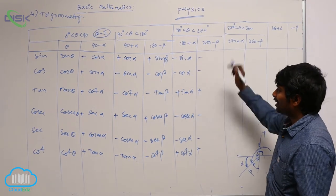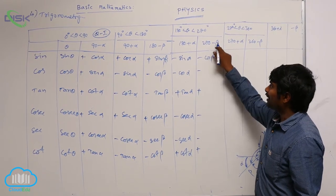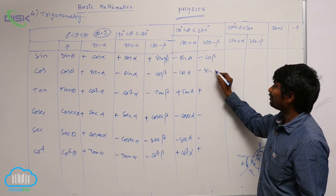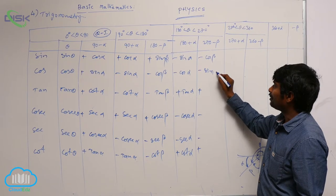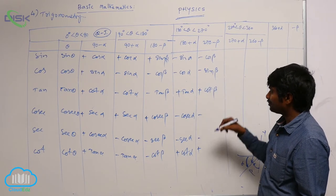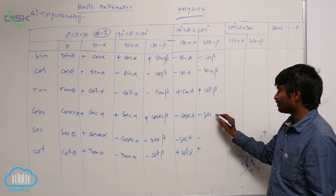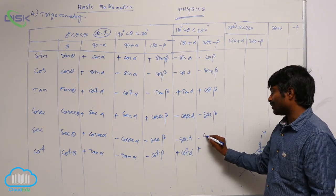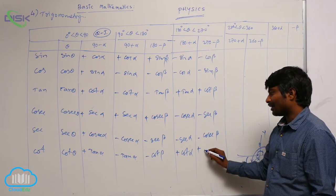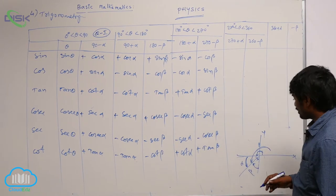For 270°, the ratios swap: sin will become cos (cos beta here), cos will become sin, tan will become cot, cosecant will become secant, secant will become cosecant, and cot will become tan.